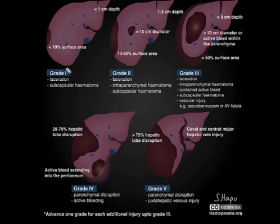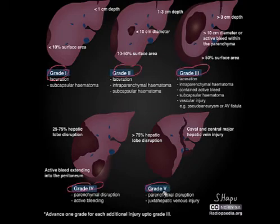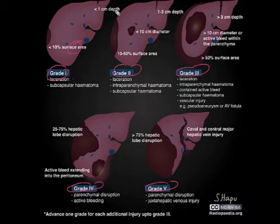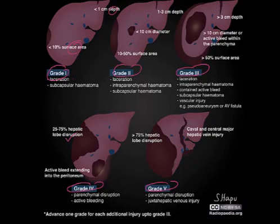Here we can see the classification of AAST. We have 5 grades: grade 1, grade 2, grade 3, grade 4, and grade 5. In grade 1, the subcapsular hematoma is less than 10% surface area and the laceration depth is less than one centimeter. In grades 4 and 5, there is a difference in hepatic lobe disruption. We will go into detail of each grade individually.